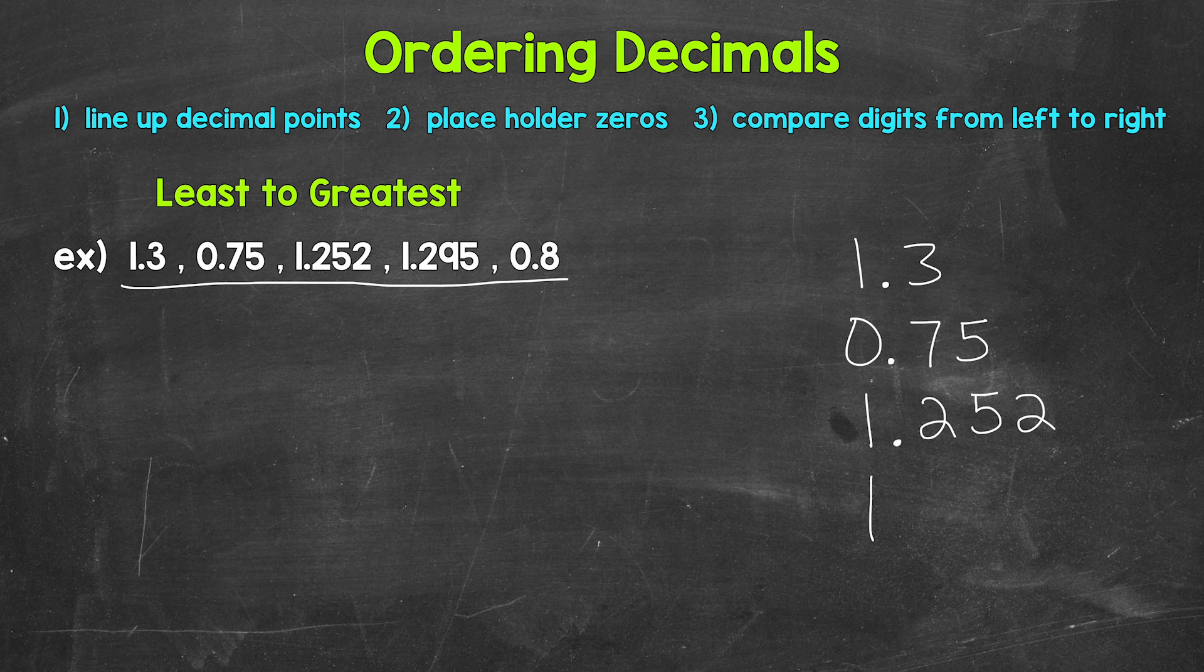Next, we have 1 and 295 thousandths. And then lastly, we have 8 tenths.